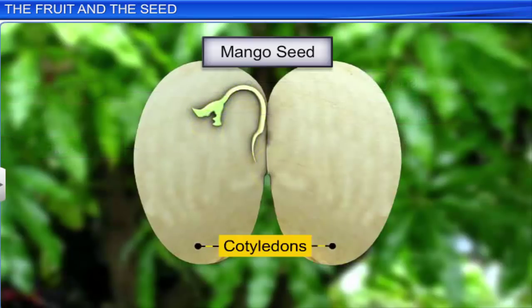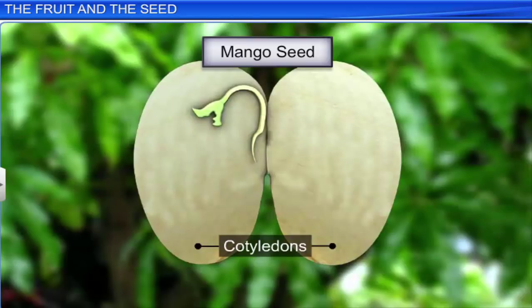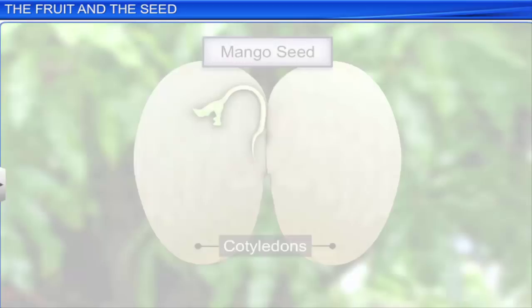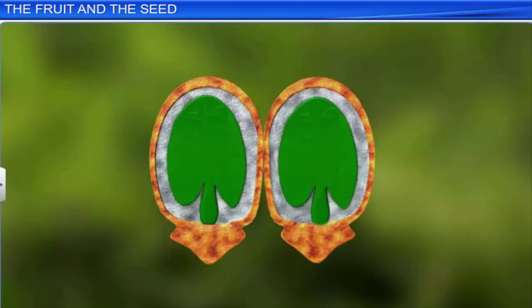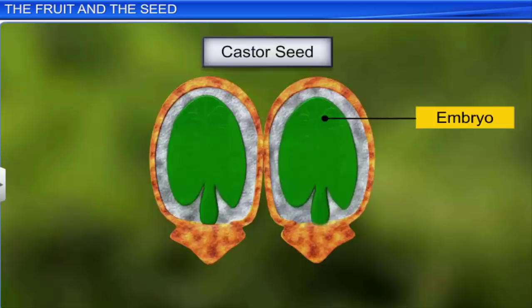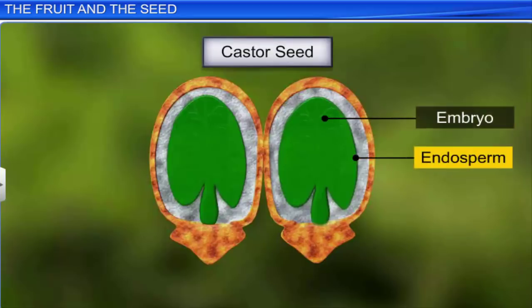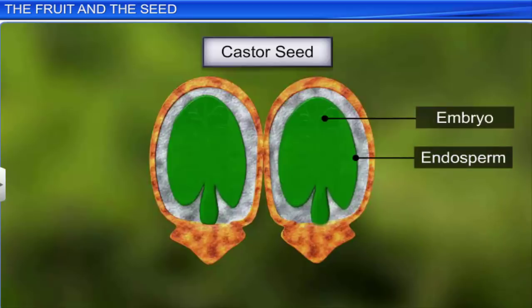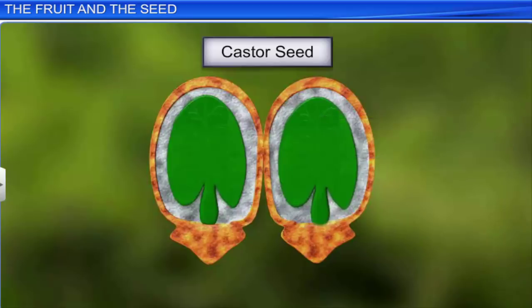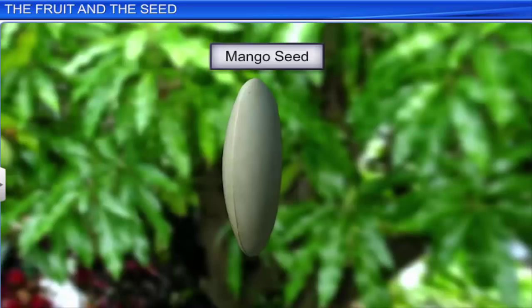The cotyledons are often fleshy and store reserve food materials. In some seeds such as castor, the developing embryo is surrounded by a nutritive tissue called the endosperm, which stores food and helps the embryo grow. Seeds with endosperm are called endospermic, whereas in seeds like mango, the endosperm is absent — such seeds are called non-endospermic.